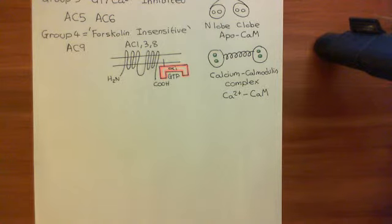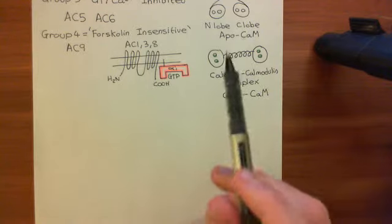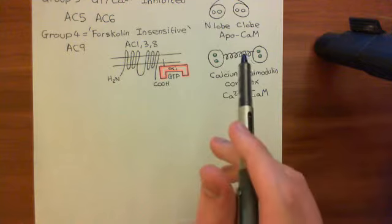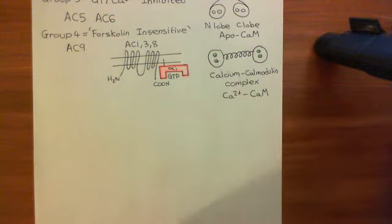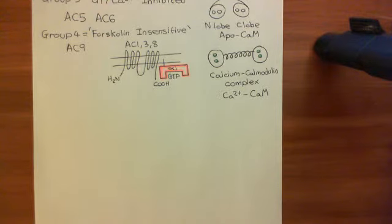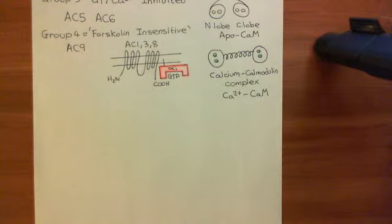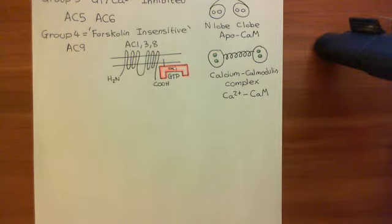All three of the G-alpha I subunits will go off and block the activation of adenylyl cyclase I, III, and VIII — group I adenylyl cyclases — by calcium, and also directly inhibit adenylyl cyclase V and adenylyl cyclase VI, which are group III adenylyl cyclases. This results in a reduction in cytoplasmic cyclic AMP.